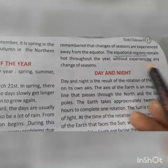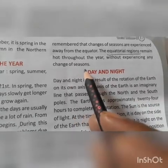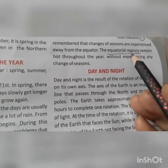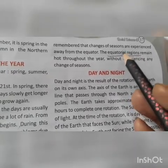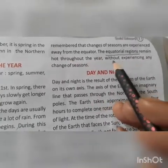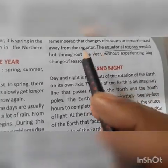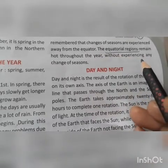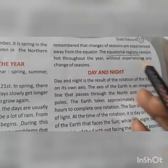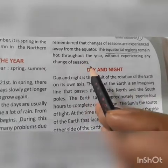The equatorial regions remain hot throughout the year without experiencing any change of seasons. Equatorial regions means near the equator. The regions near the equator remain hot throughout the year, which means there are no changes of seasons. Equatorial regions have the same season — hot throughout the year.